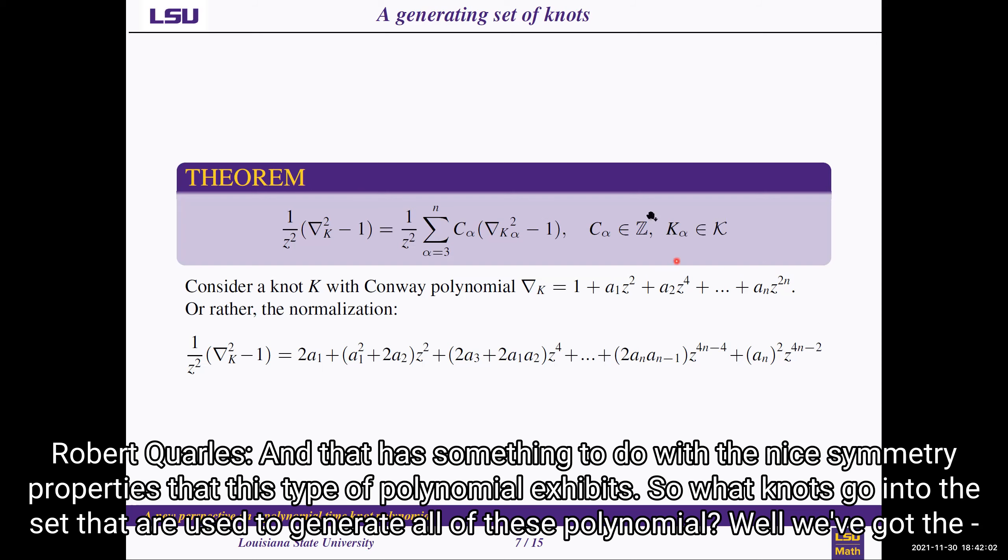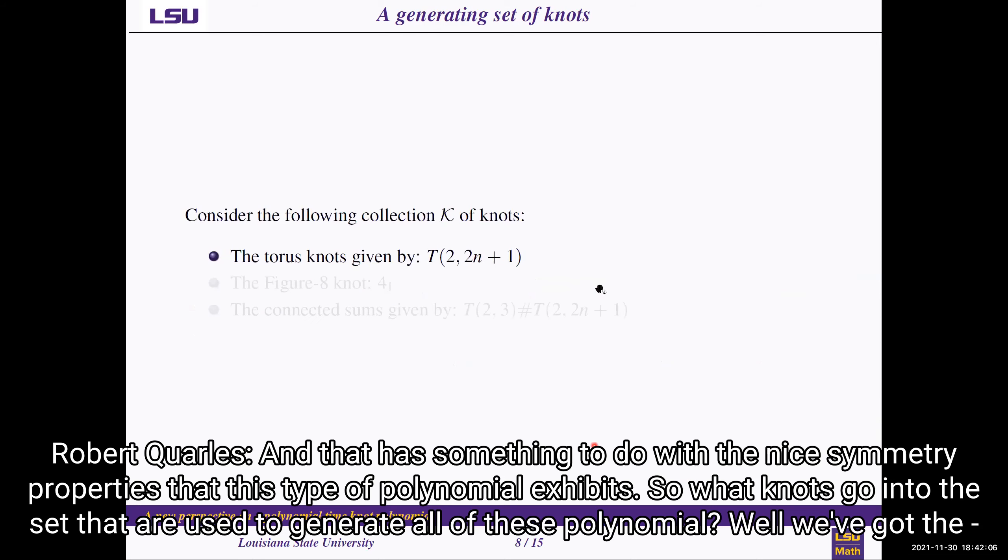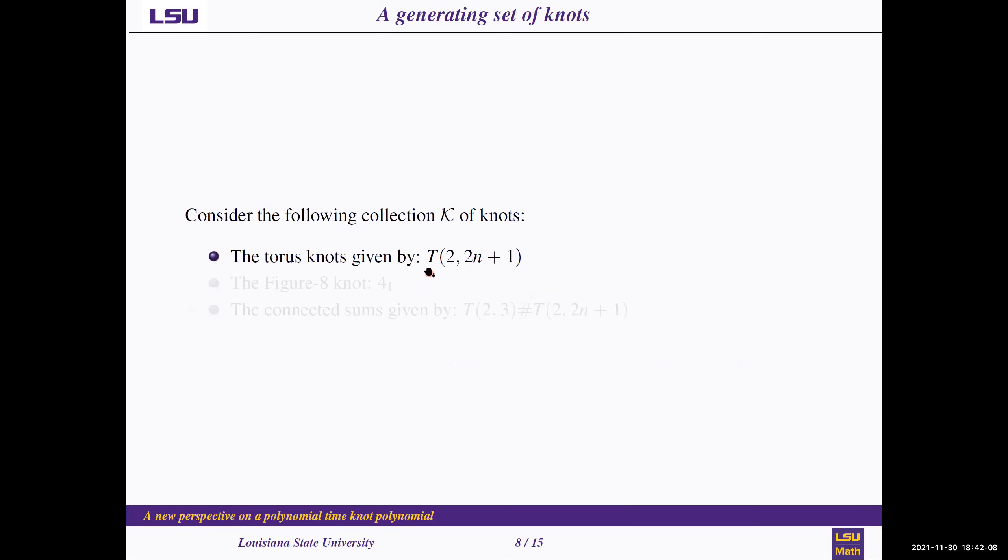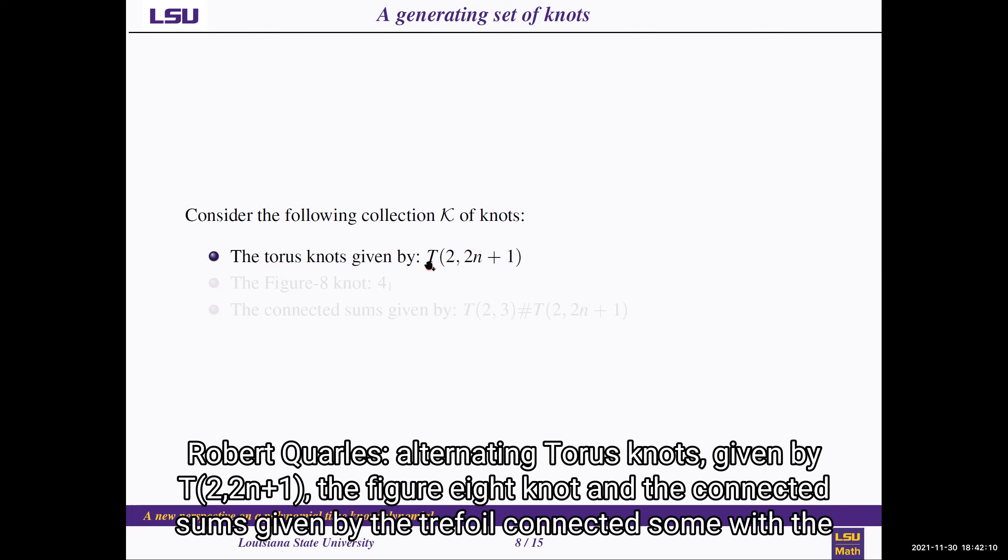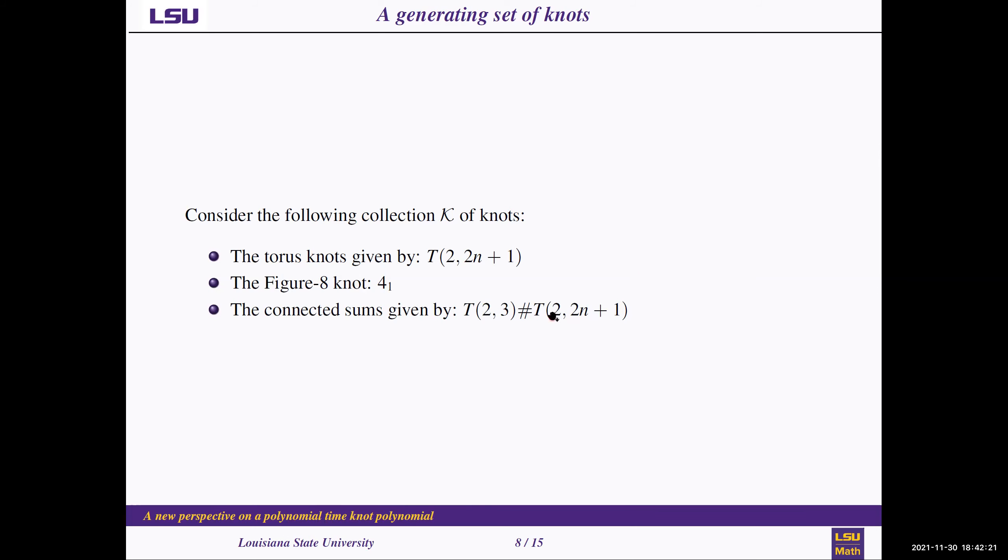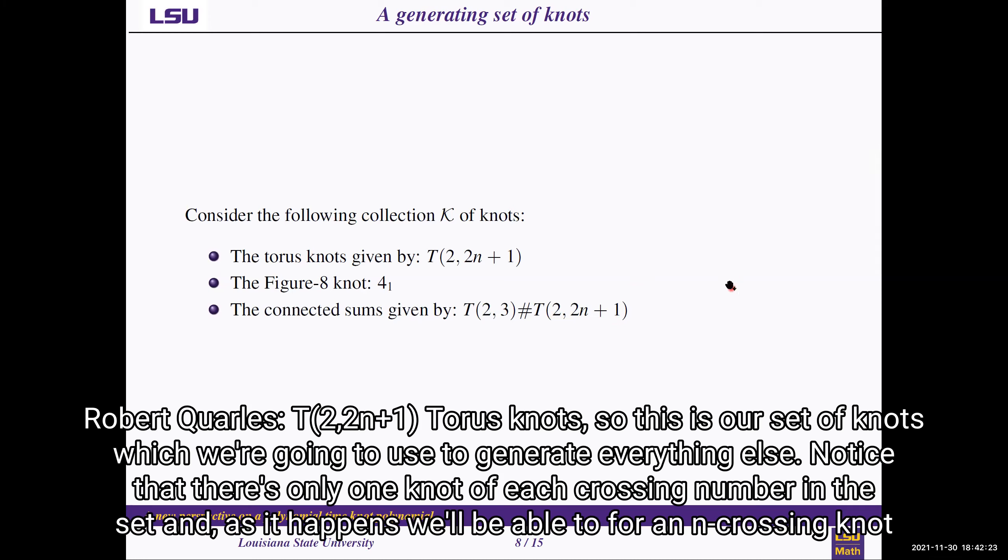And so what knots go into this set that are used to generate all of these polynomials? Well, we've got the alternating torus knots given by T(2, 2n+1), the figure eight knot, and the connected sums given by the Trefoil connected sum with the T(2, 2n+1) torus knots.